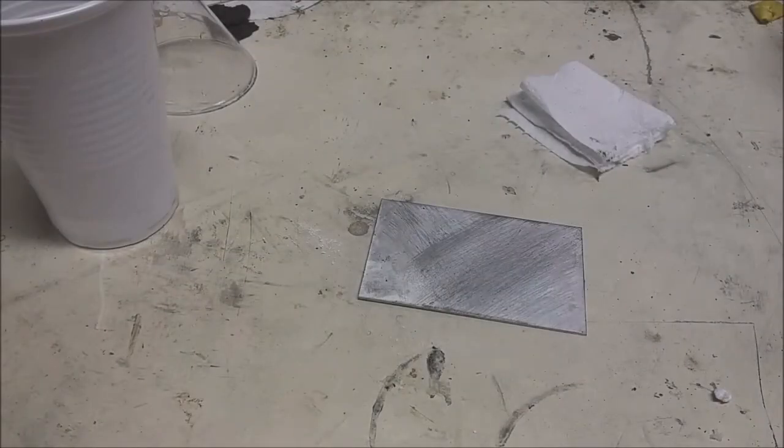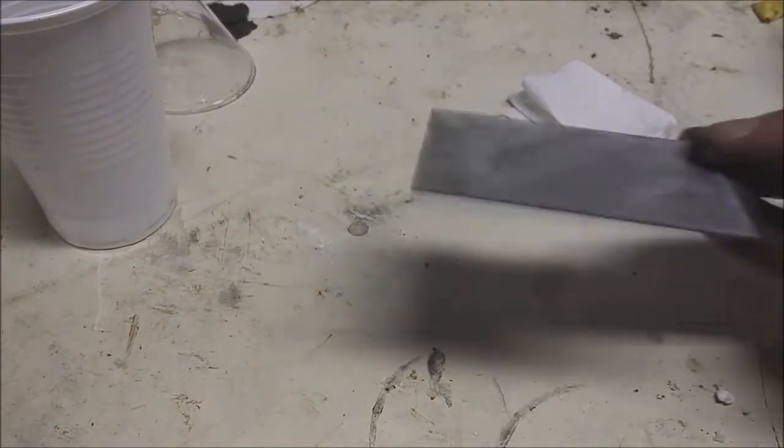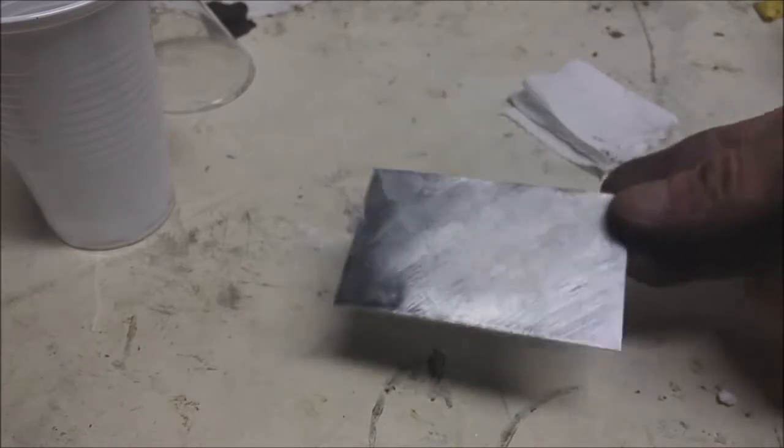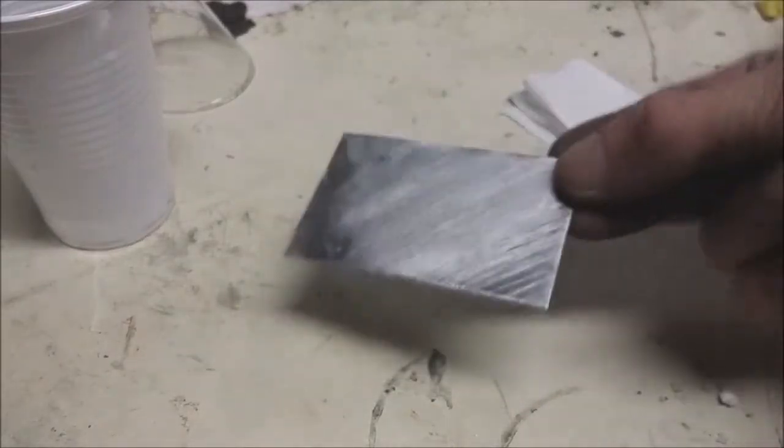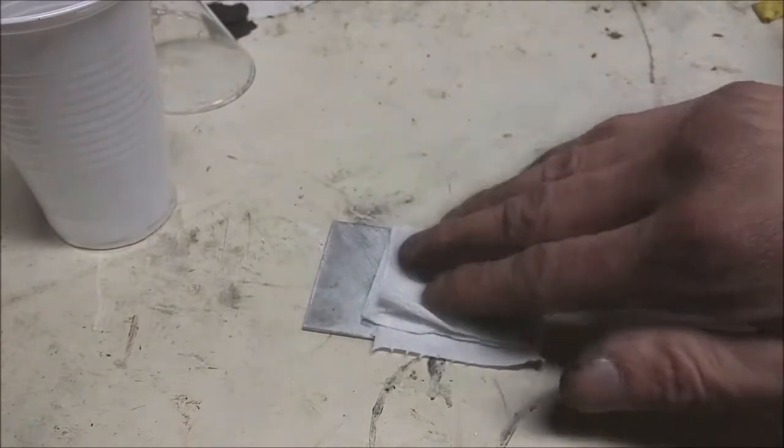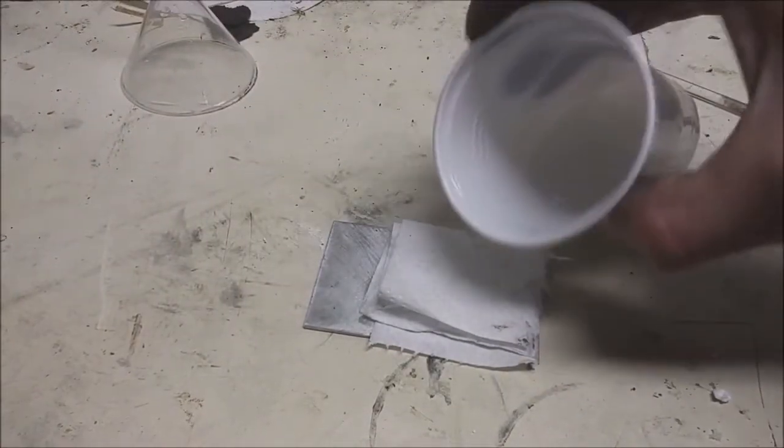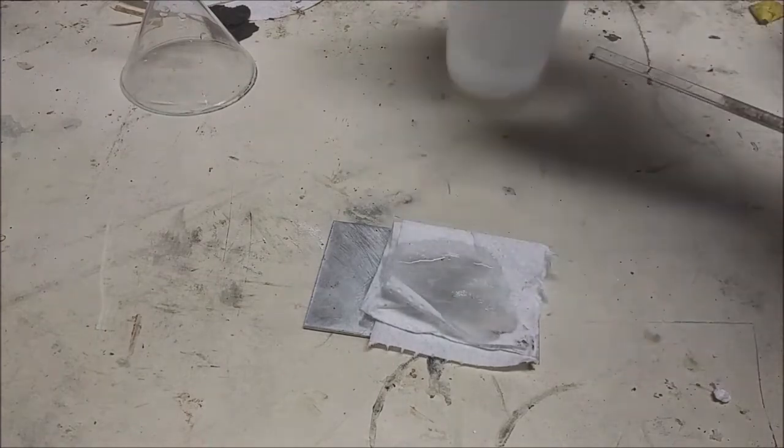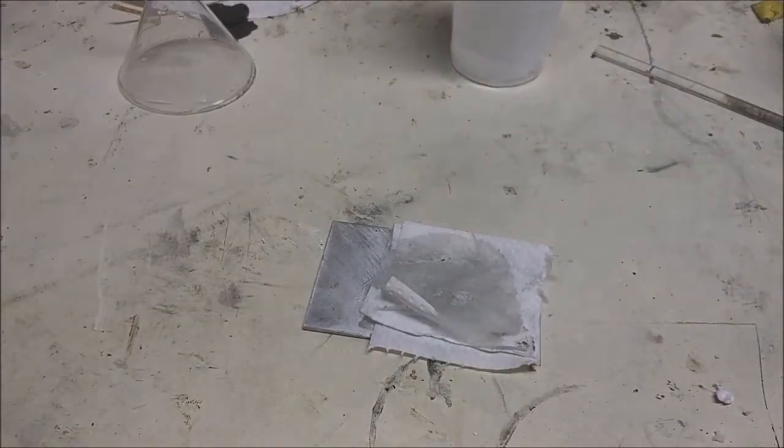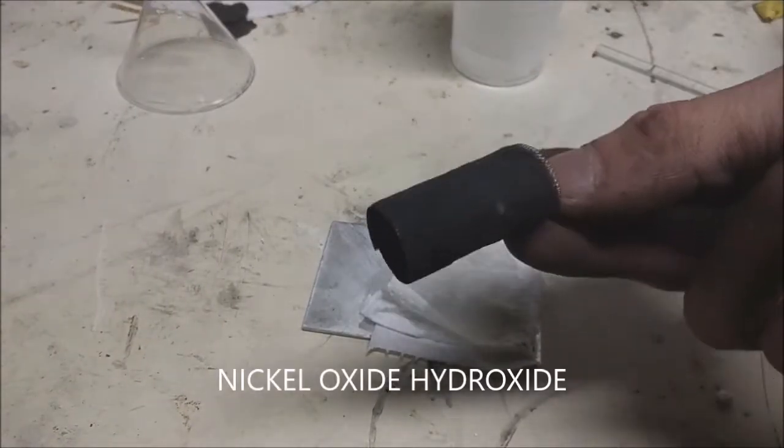Hello guys, I will show you how to make a primary aluminum battery. What you need is aluminum, of course, some separator, potassium hydroxide, and this stuff—this stuff is nickel.